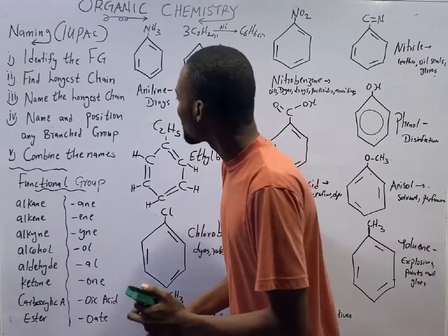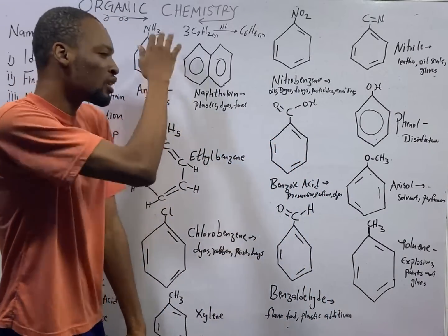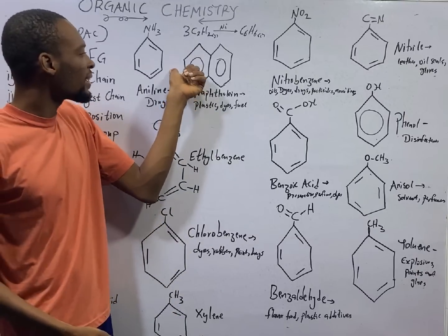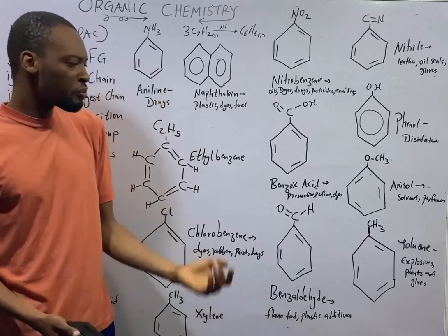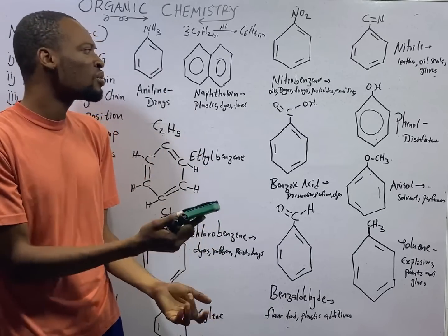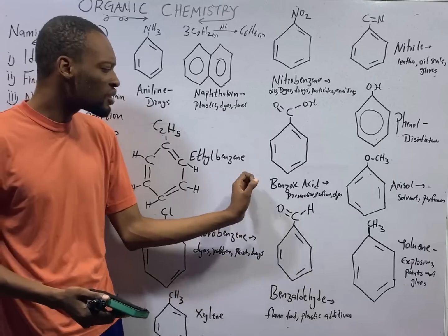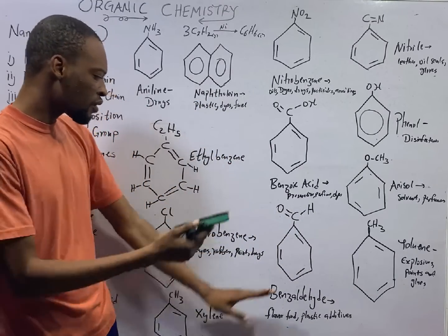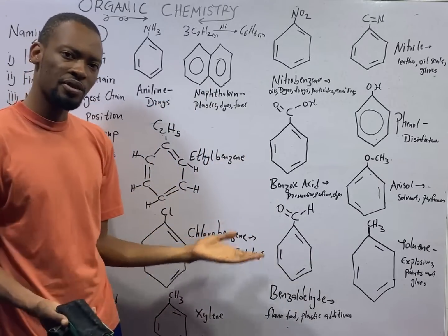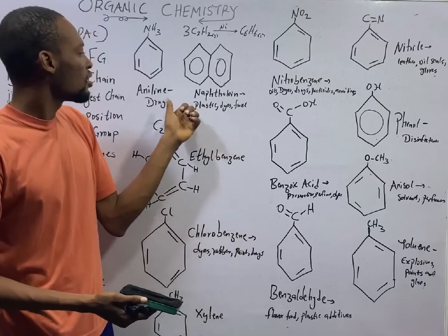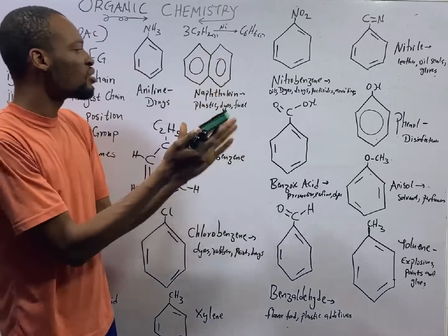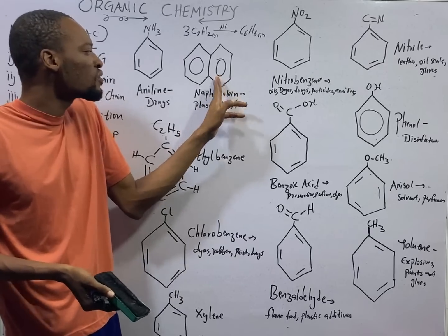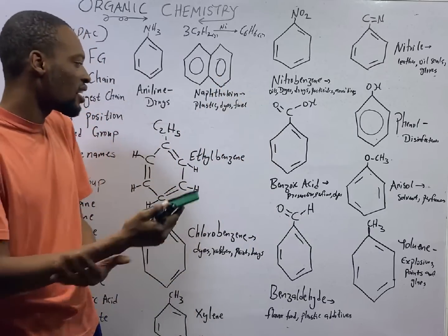If you add NH2 to benzene, that means ammonia to benzene, the name becomes aniline. Aniline is used for making drugs. Please, make sure you stream this on YouTube and make sure you increase the resolution. I recorded this video at a very high quality so you get the best experience. Don't deprive yourself of the beauty of the crystal clear video and everything on the board. When two benzene join together like this, it is called naphthalene. And naphthalene is used for making plastic dyes and mothballs.